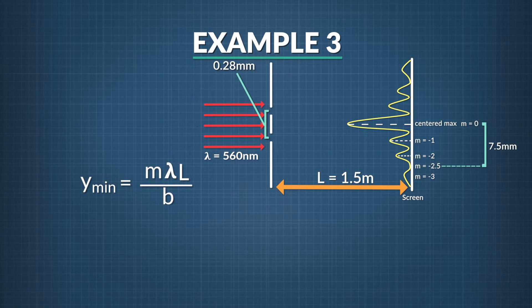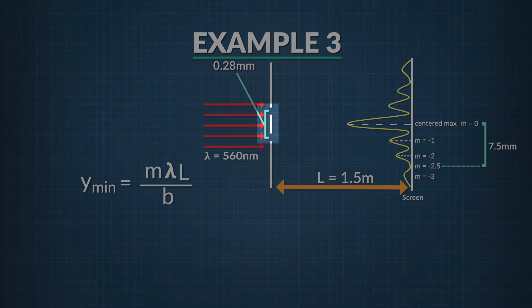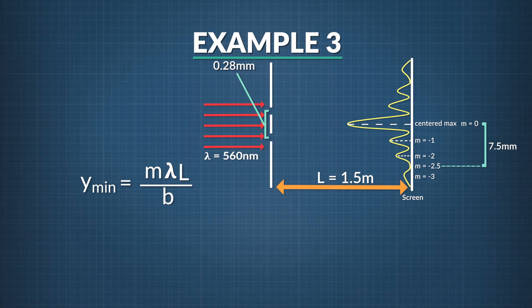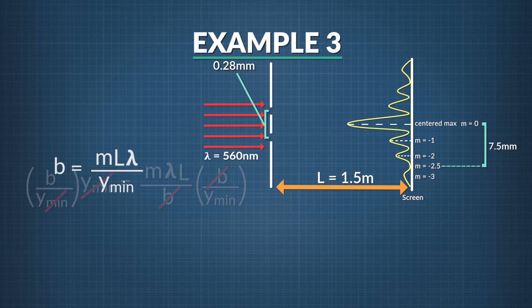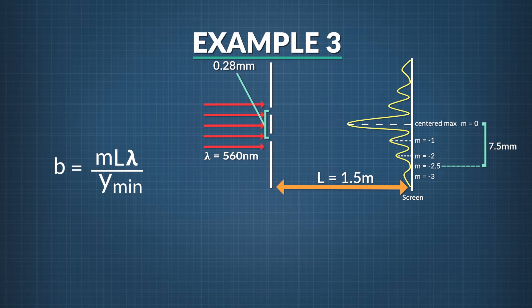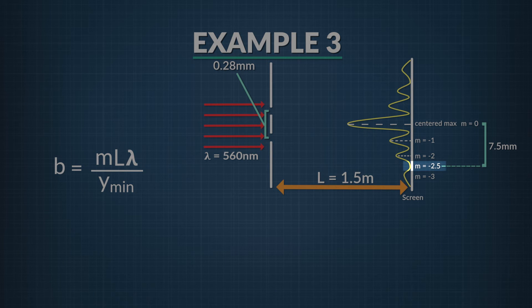Once we know we'll use the double slit equation, we want to figure out what exactly we'd like to solve for. This question asks for the distance between the two slits. That's b. So we'll rearrange the double slit equation so it says b equals something. Multiplying both sides by b and dividing both sides by y_min, we get b equals m times l times lambda divided by y_min. Now we'll want to figure out all the variables on the right side of the equation.